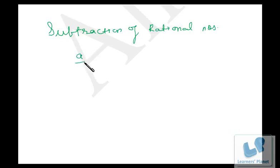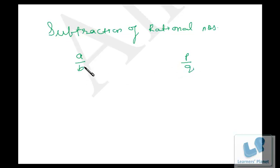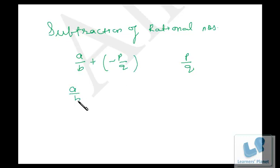Suppose I have a number a/b and I have to subtract p/q from it. What I will do is add the additive inverse of p/q, that means I will add minus p/q. So it's a/b minus p/q. It's very simple.